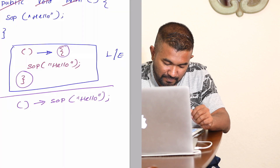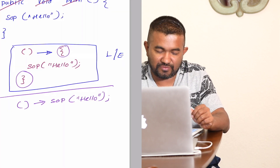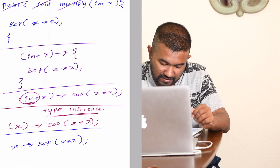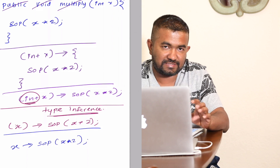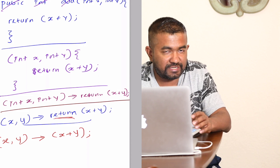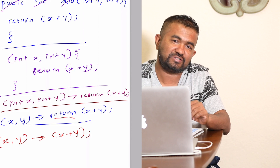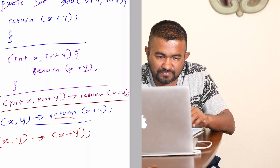Quick recap: a lambda expression is a more simple way to write the same method. The rules are: if there is only one line, you don't have to use curly braces. If the compiler can guess the data type, you don't have to specify it — that's type inference. If the compiler can guess it's going to return a value, you don't have to specify the return type. When we apply all those rules together we have a lambda expression. But we are missing one piece to compile it, and we'll talk about that in the next video.